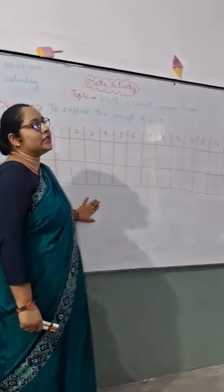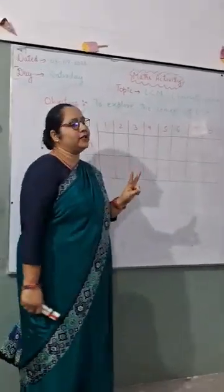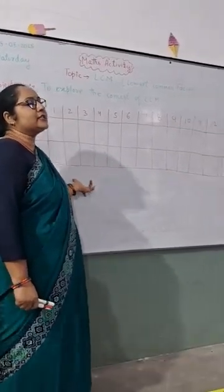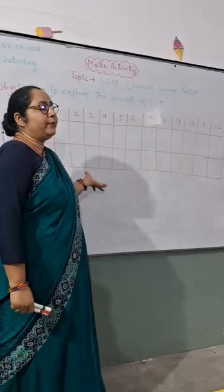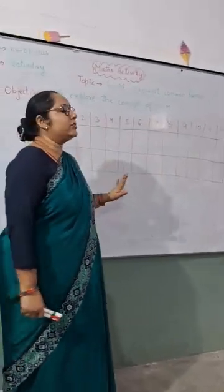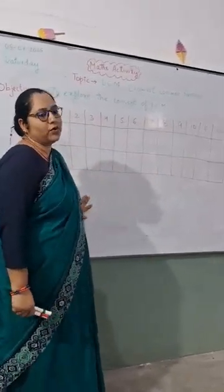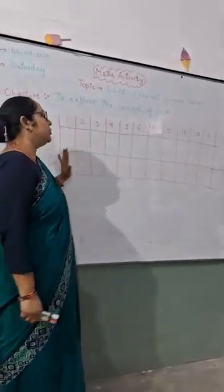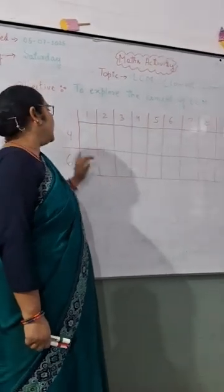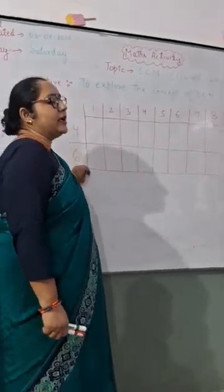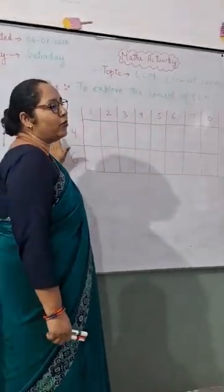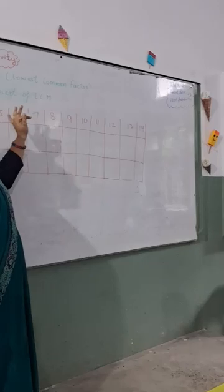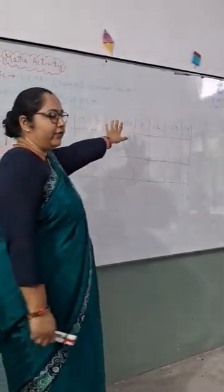Then we will find the LCM of 4 and 6 by 2 methods. This one method is called Activity Method. And next one is your traditional method which we have given to you in Math. We will study both of them. First of all, look, what you have to do? Here is 4, here is 6. And you have to take the multiples of 4. These are the numbers from 1 to 14. You can take further also.